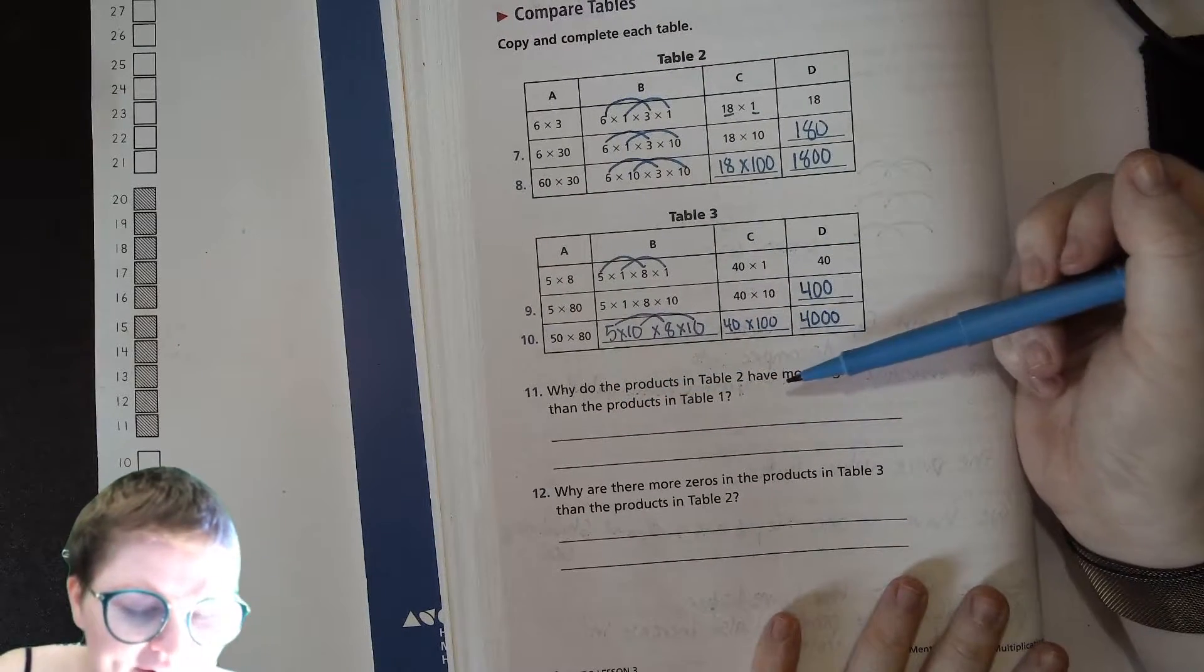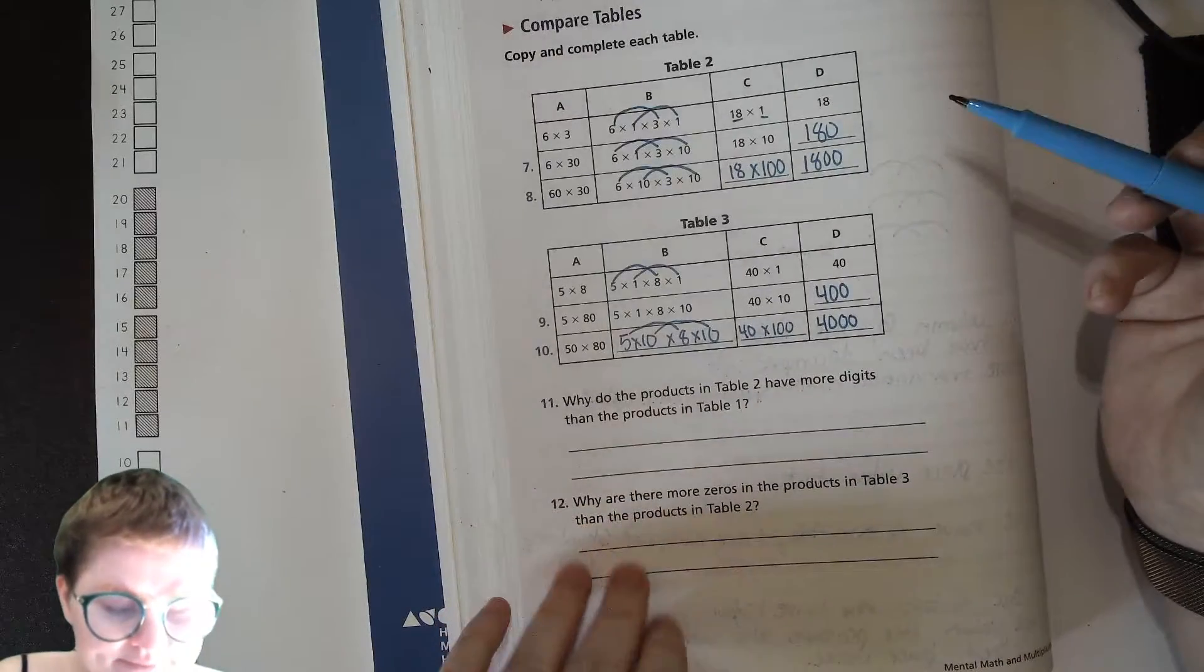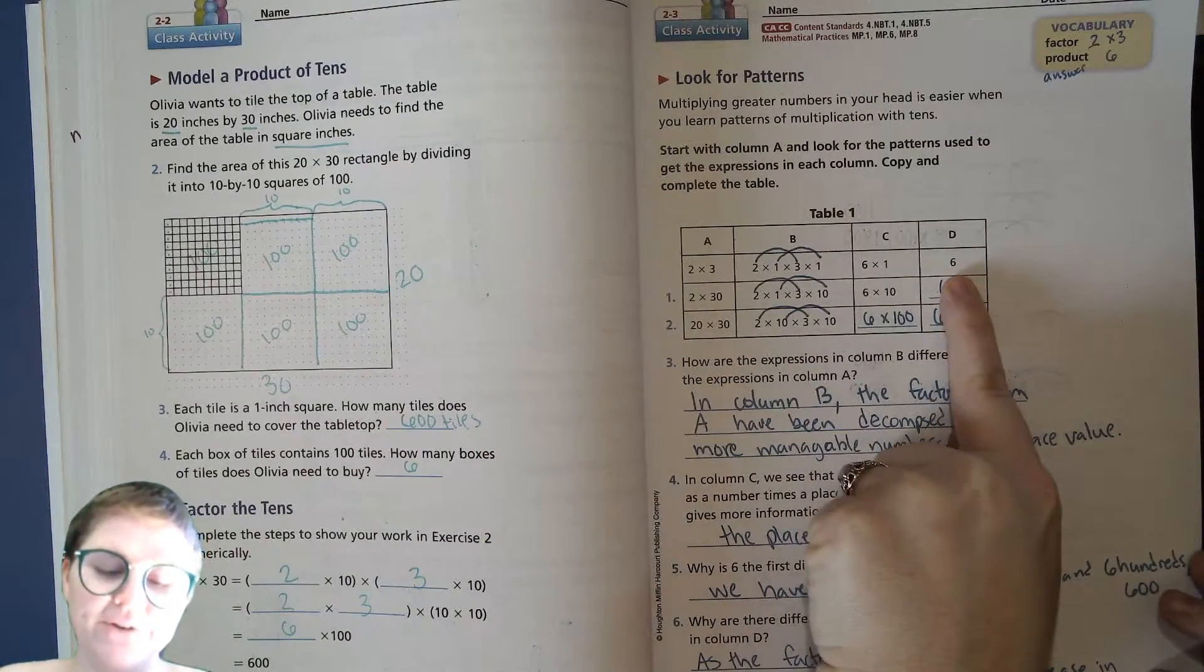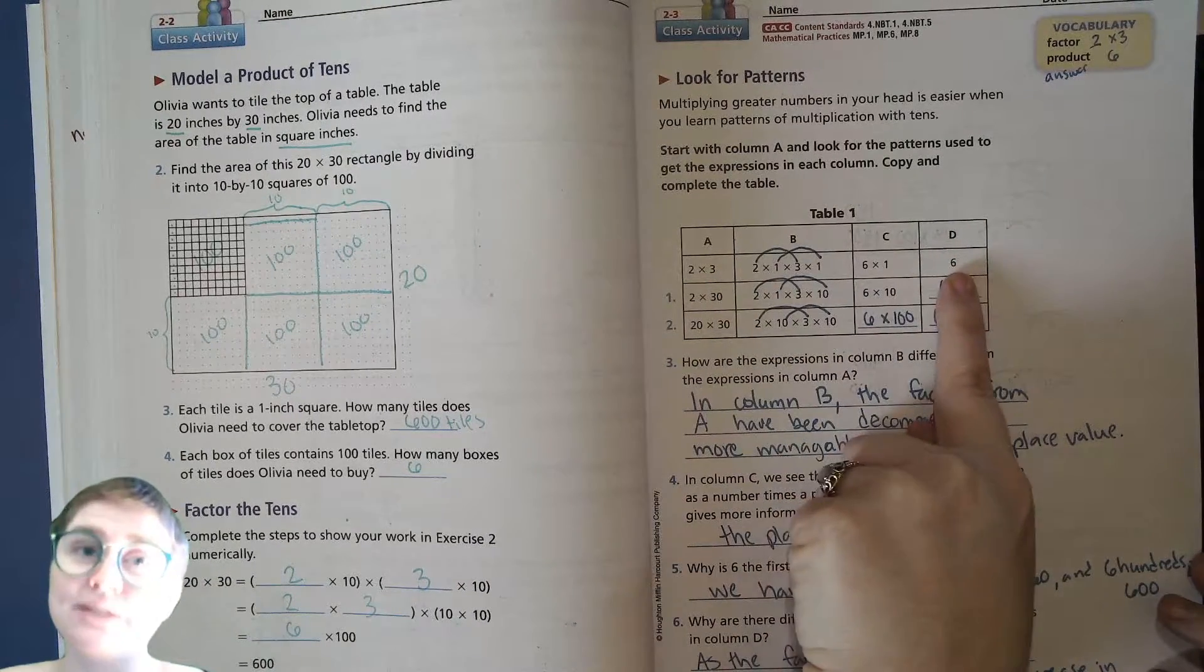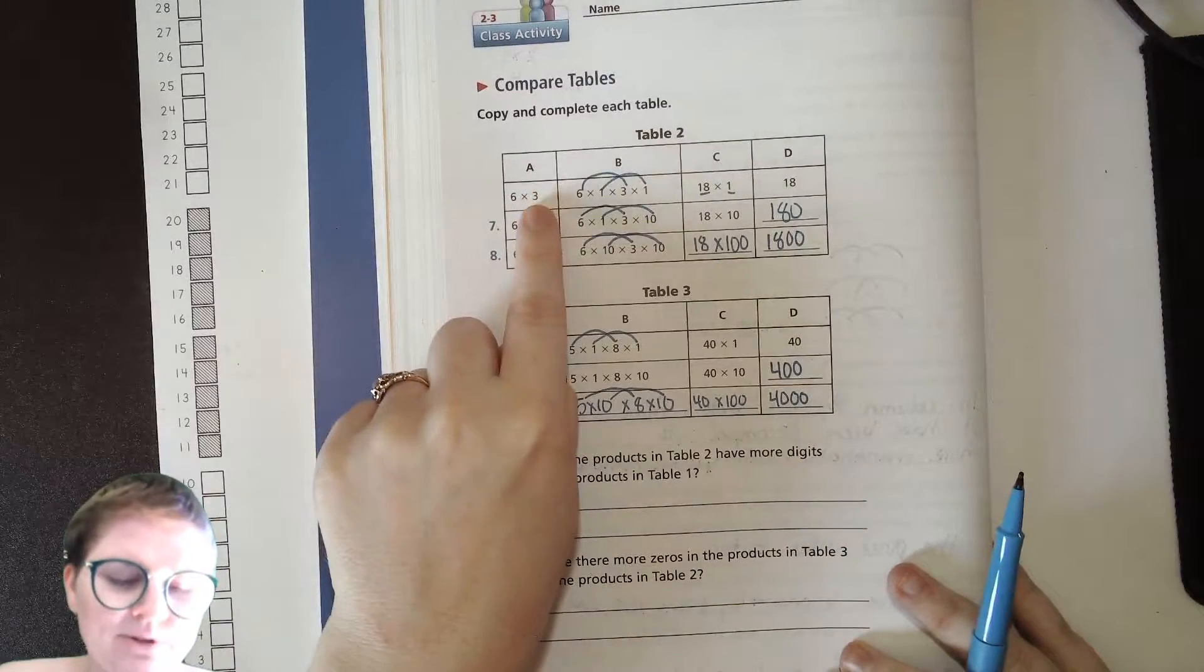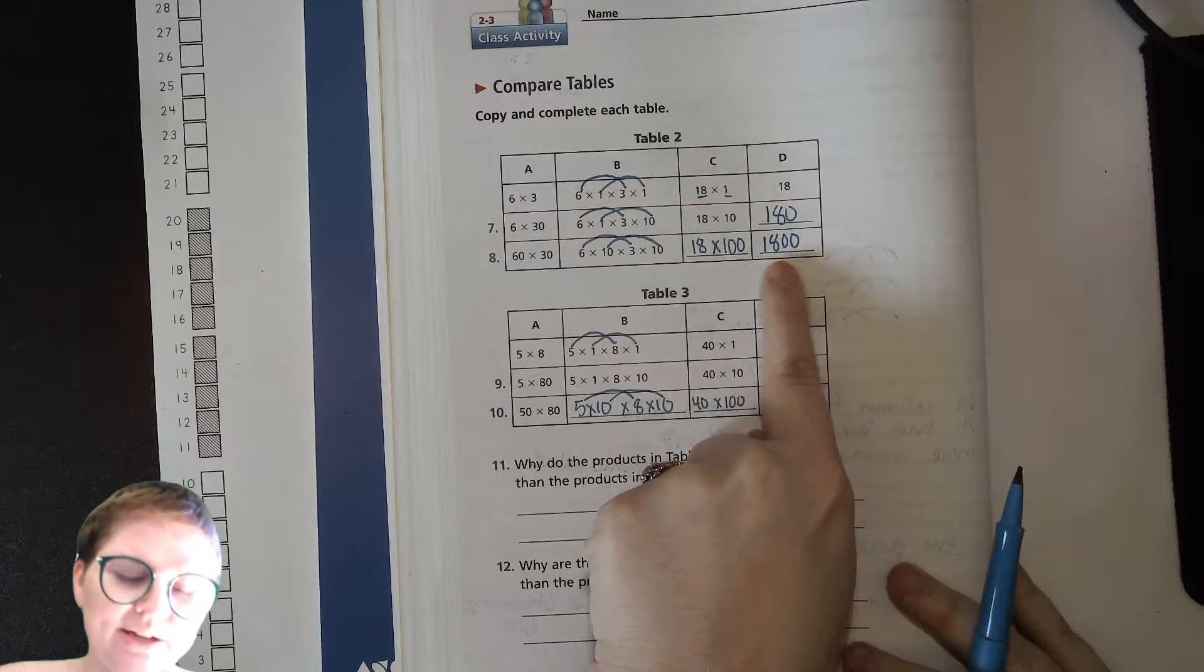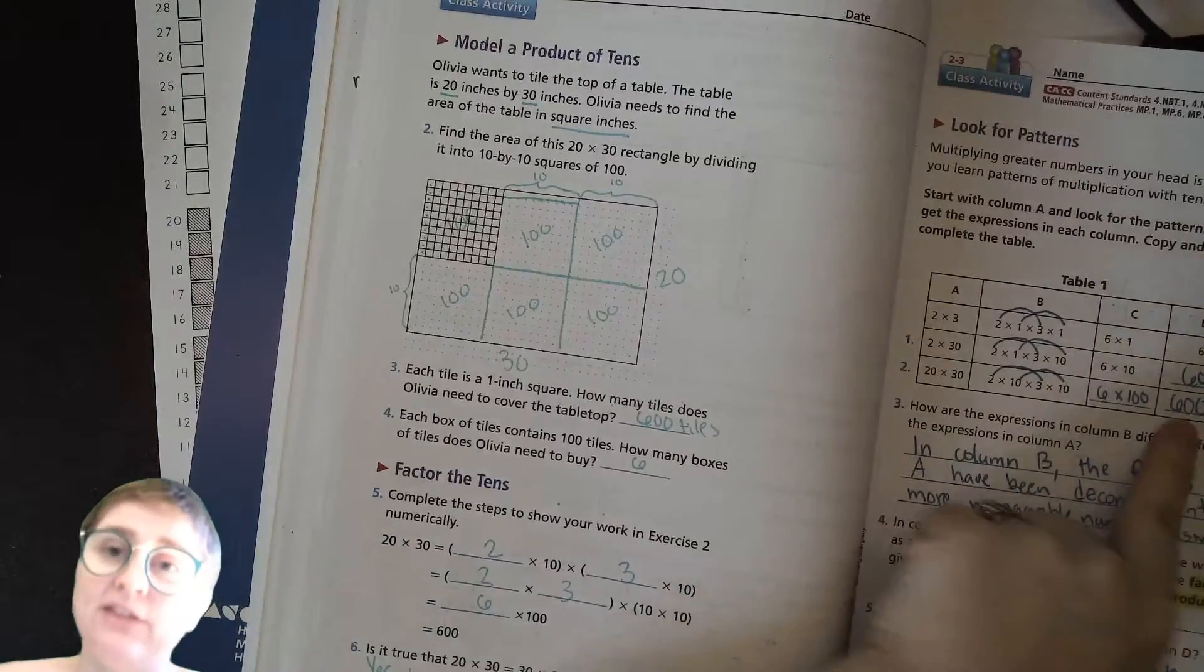Why did the products in table two have more digits than the products in table one? Let's look back at table one. So here we only ended up having something that got to six hundred, and our first product here, two times three, was a single digit answer, single digit product of six. Looking over here, six times three got us a two digit product, eighteen. Now our final answer, it has four digits, and this one had three.